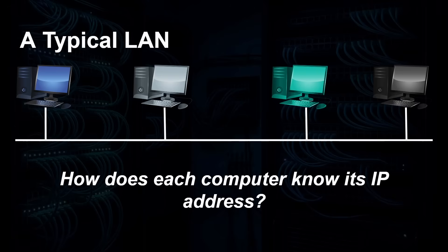But how does each computer know its address? One way is you can manually configure it — go to each computer and say, you are 192.168.0.7, you are .8, you're .21, you're .100. I do that with some of my devices, like my NAS server, which I want to have a permanent IP address. However, you can also get them allocated dynamically, and a more advanced option is configuring certain devices to always get the same address — dynamically yet permanently setting a static address.